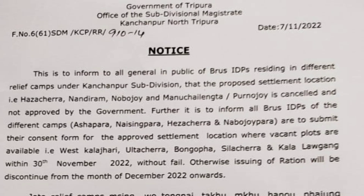This is to inform all general public of BRUIDP residing in different relief camps under Kanchanpur subdivision that the proposed settlement locations — Hazar Chera, Nandirampara, Nabojoe, Monusulenta, and Purnojoe — are cancelled and not approved by the government.